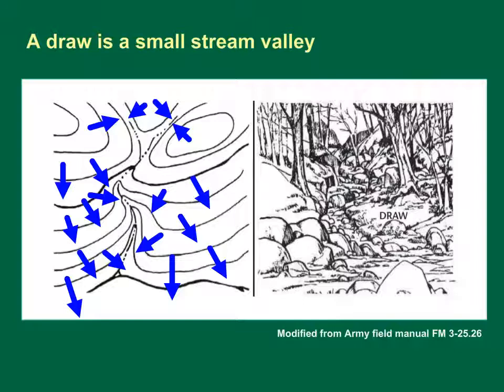On a map, the contour lines depicting a draw may be U-shaped or sharply V-shaped pointing to higher ground. In this case, the two hilltops on the left do not form part of the basin divide because the flow from both sides drains to the same point in the valley floor.